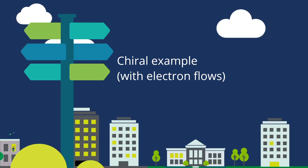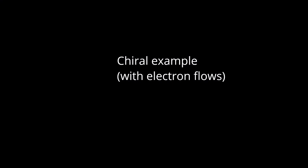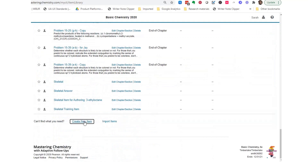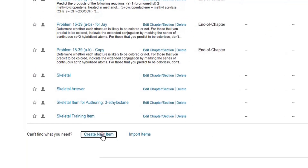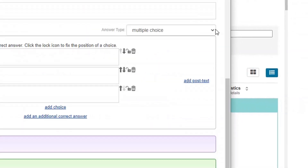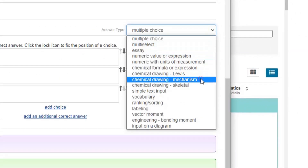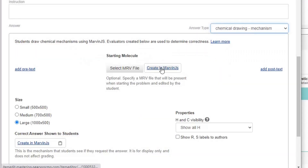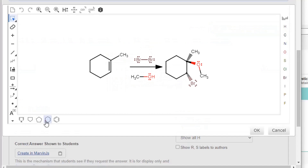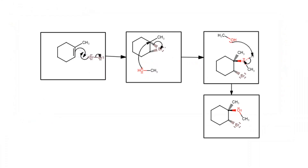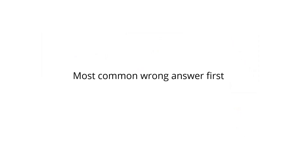Chiral example with electron flows. In the item library in Mastering Chemistry, select Create New Item. Change the answer type to Chemical Drawing Mechanism. Create the starting figure in MarvinJS. Under Correct Answer Shown to Students, select Create in MarvinJS and draw the correct answer as you'd like students to see it. Students see this if they request the answer. Now add evaluators — most common wrong answer first.